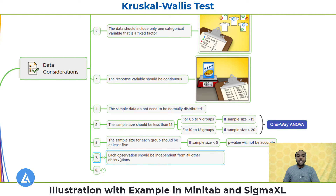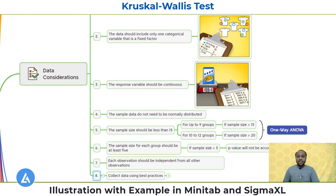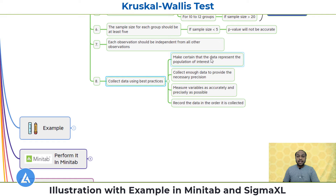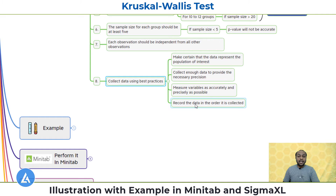The seventh data consideration is that each observation should be independent from all other observations. If observations are dependent, the interpretation of results will not be accurate. The eighth and last data consideration — also applicable for all non-parametric tests — is to collect data using best practices. There are four: make certain the data represents the population of interest; collect enough data for necessary precision; measure variables as accurately and precisely as possible; and record data in the order it is collected.